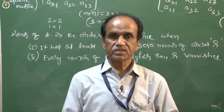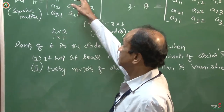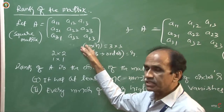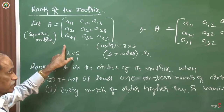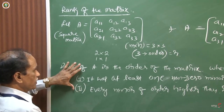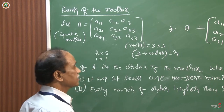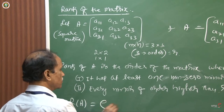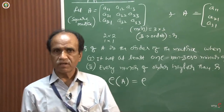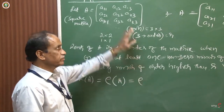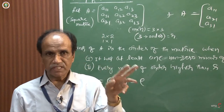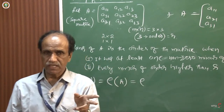Dear students, we were studying in my previous discussion about the rank of the matrix. For example, I have taken a 3×3 matrix, which is a square matrix. Rank will be studied for both square and non-square matrices. The notation for rank is R of A, equal to Rho of A. Any notation — capital R or capital Rho — can be used to represent the rank. Rank will be calculated by two methods: one is the determinant method and another is the elementary row operation method.